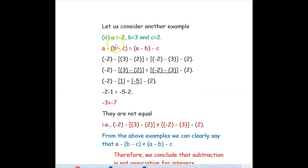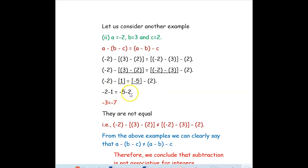Consider one more example: a = negative 2, b = 3, c = 2. Left side: 3 minus 2 = 1, so negative 2 minus 1 = negative 3. Right side: negative 2 minus 3 = negative 5, so negative 5 minus 2 = negative 7. Negative 3 does not equal negative 7, so they are not equal. From these examples, A − (B − C) ≠ (A − B) − C.